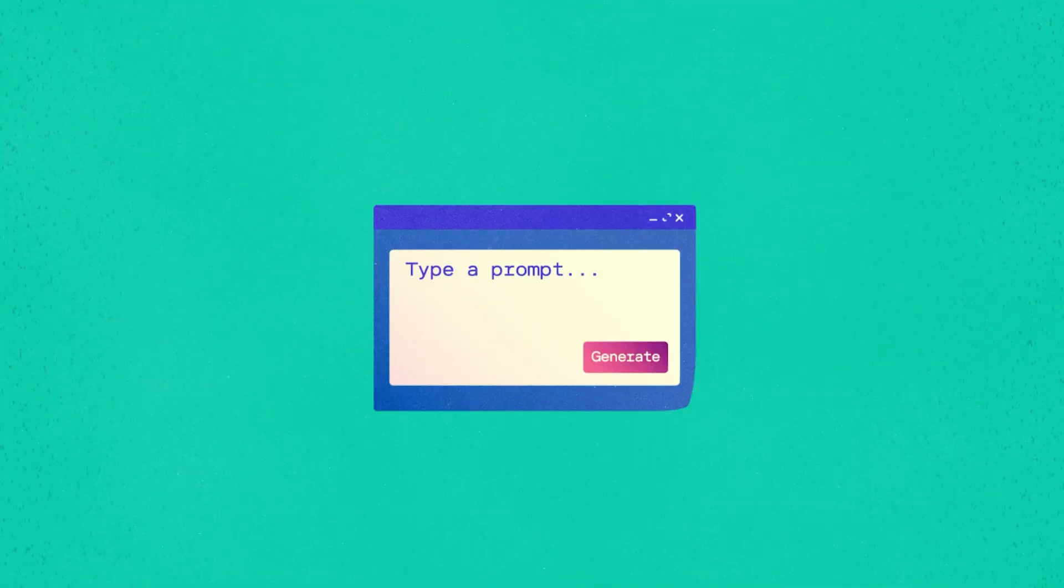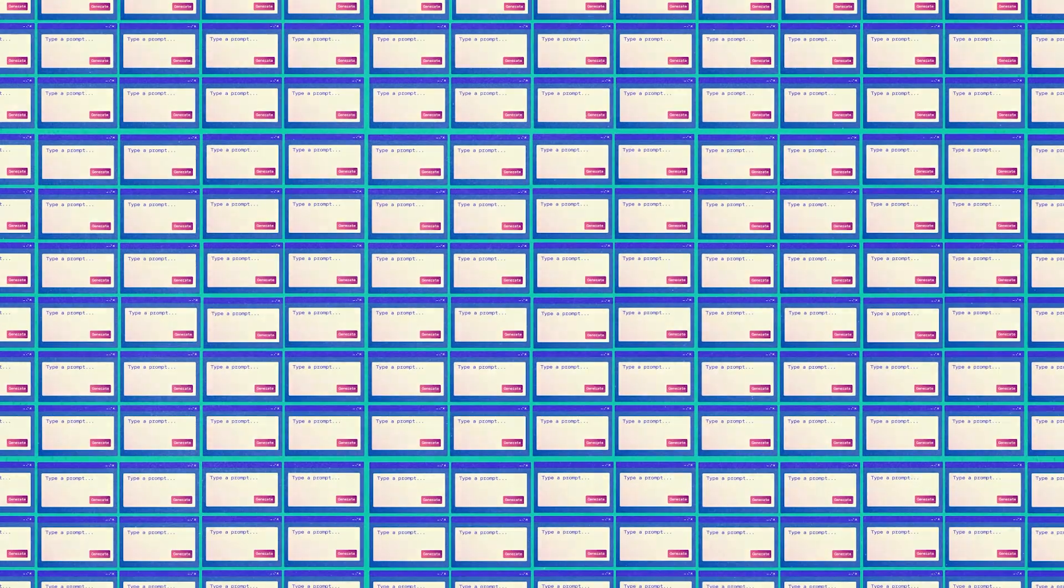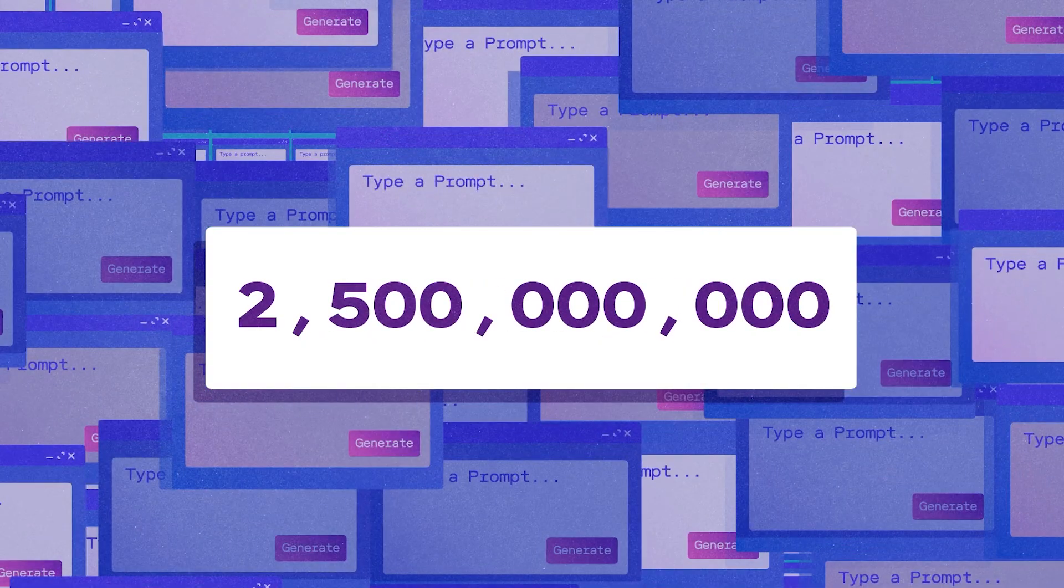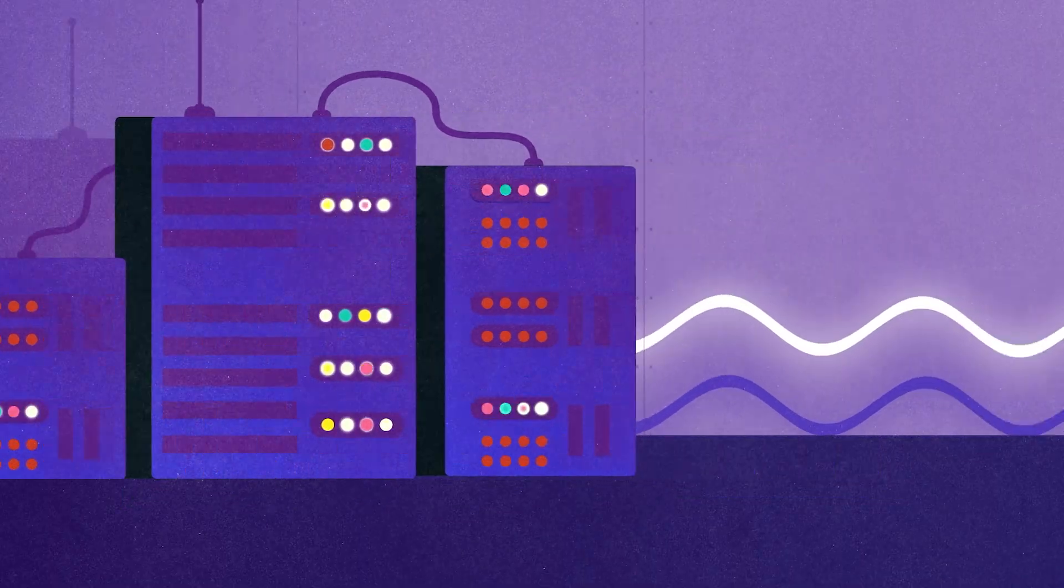Now let's look at what happens when you put everyone's individual queries together. OpenAI has said that ChatGPT receives about 2.5 billion queries each day. All of the responses to those queries are generated in a data center, and data centers are often powered by particularly dirty forms of energy like natural gas and coal.